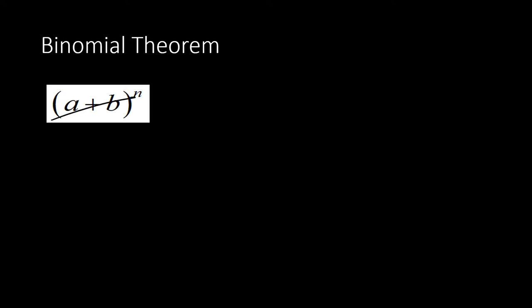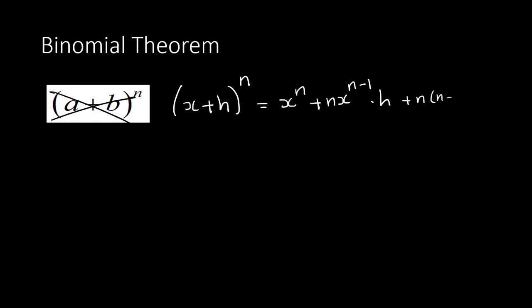The binomial theorem for (x+h)^n is: x^n + n·x^(n−1)·h + [n(n−1)/2]·x^(n−2)·h² + … and so on to infinity. You must show the dot-dots to indicate it is infinite.